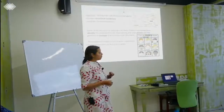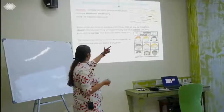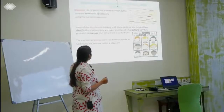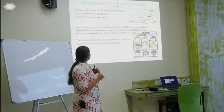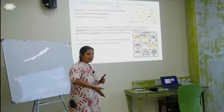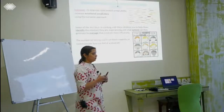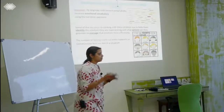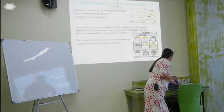Some of the key ideas in working with children were to help them identify the emotion they are experiencing and what actions they can take to manage those emotions. The number of feeling words we know supports our ability to communicate how we feel. Kids with limited verbal ability usually don't express that much — it's generally taken for granted that they might not be experiencing things.